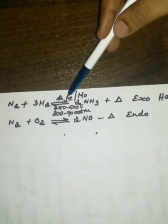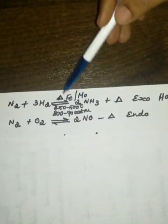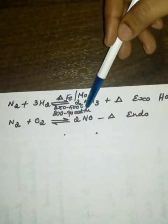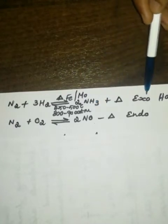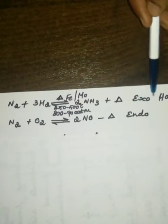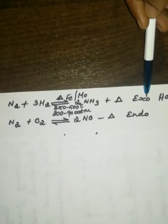Now, here, by using the catalyst iron and promoter molybdenum, and you have to maintain a temperature of 450 to 500 degrees Celsius, and a pressure of 800 to 900 atmospheric pressure, lot of heat will be liberated. It is evolved. So we call this reaction as exothermic, because we are indicating with a plus heat sign. That is, exothermic reaction.